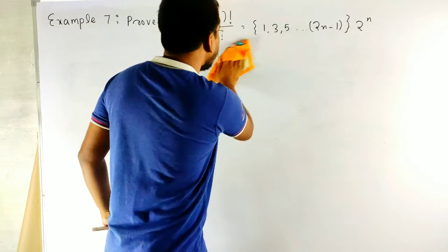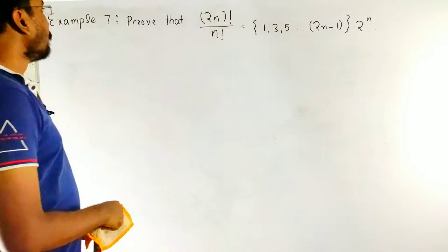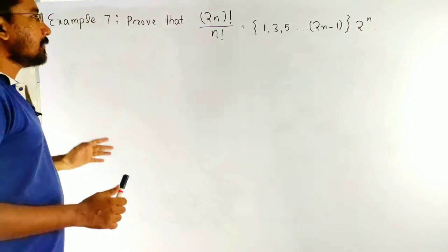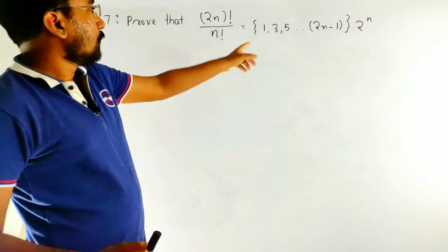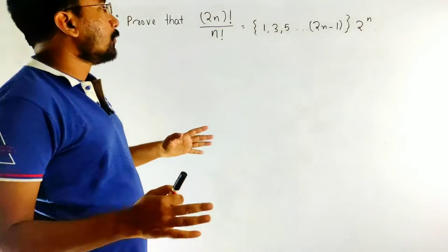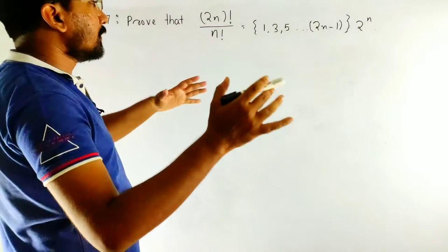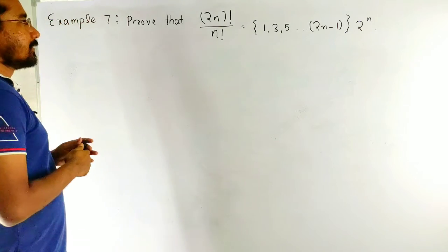What is the question? Prove that 2n factorial by n factorial equal to 1, 3, 5, 2n minus 1 whole multiplied by 2 to the power n.